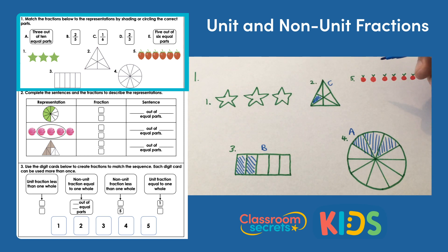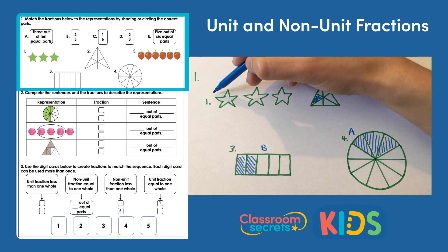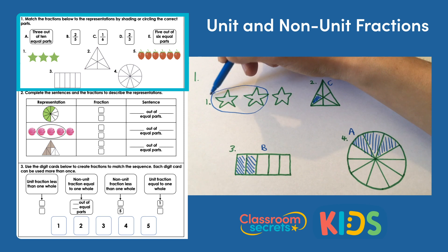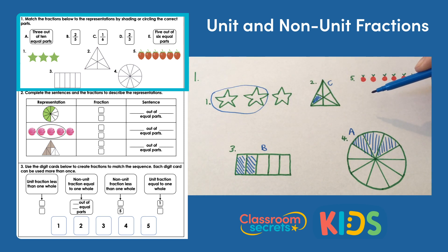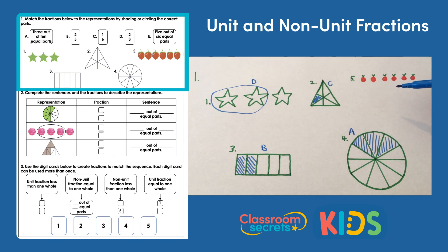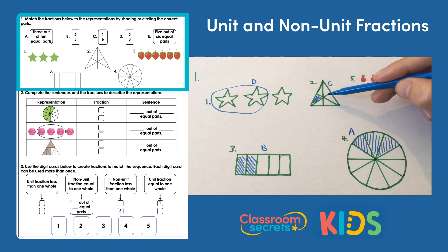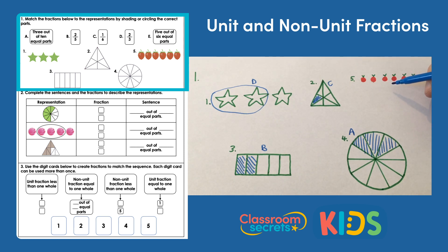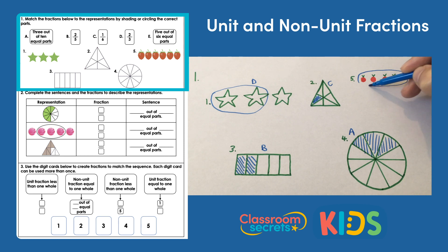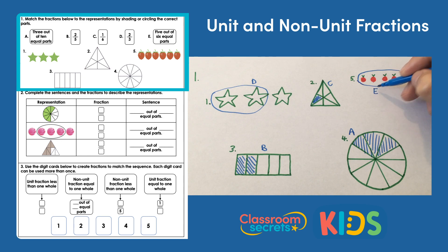D is two thirds. Something in three equal parts that makes the whole is these stars — I need to circle two of them for two thirds. That means number one matches to D. And the last one, E, is five out of six equal parts. I've got five fruit left, so I need to circle five of them out of the six to match five sixths, which means E matches to number five.